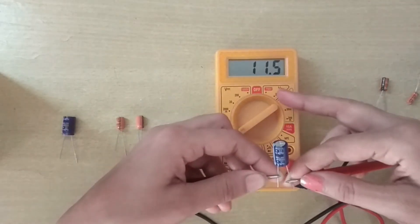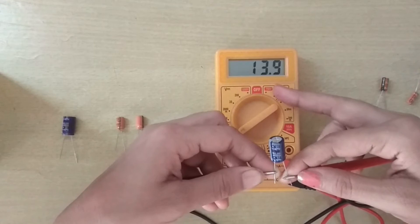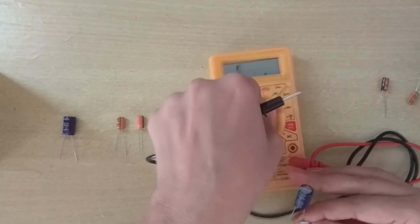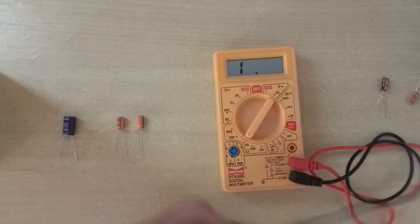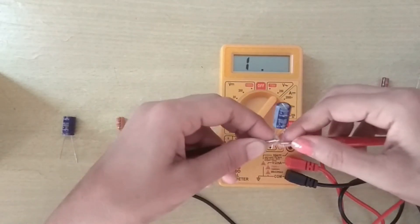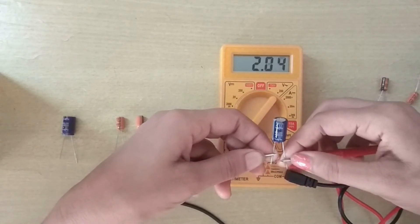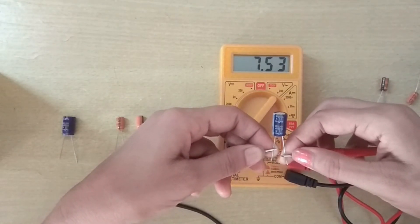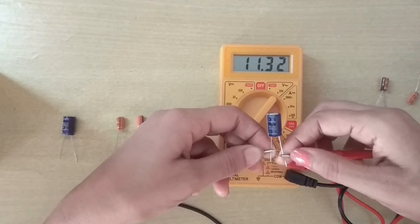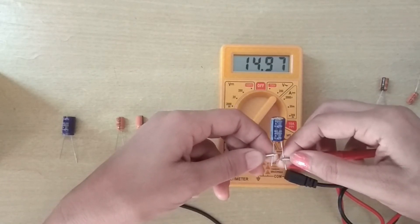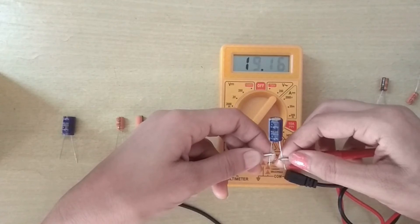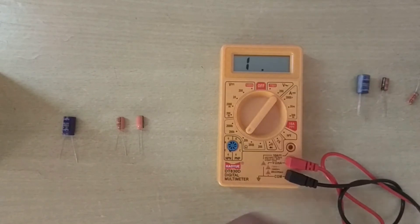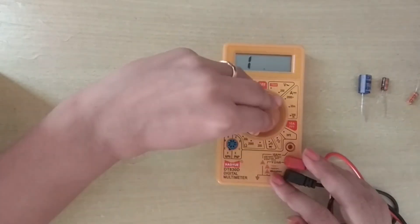We can see that the reading is increasing very slowly, so we can place this knob in a lower range and check. This capacitor is also OK. We can also test capacitors in continuity range.